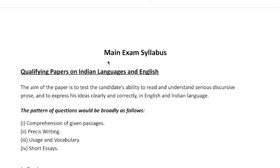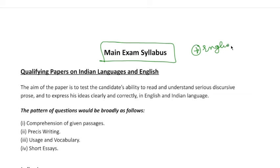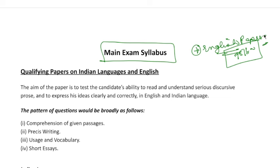Then, the main exam syllabus. The first paper you will do is an English paper, which is also of qualifying nature — just like CSAT. If you do not qualify it, then your other papers are not evaluated. But you have to score only 75 marks out of 300 or 250, so it is an easy paper. You will get 75 marks easily.